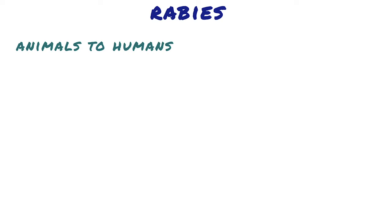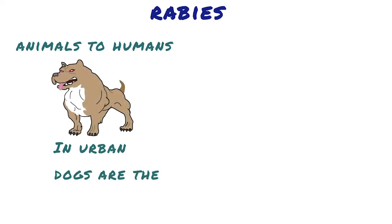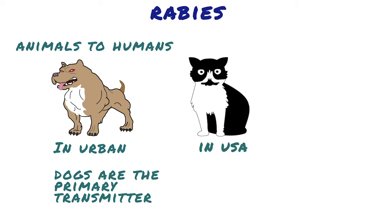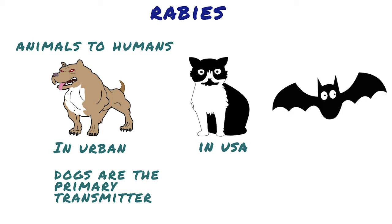Rabies is maintained and spread in two ways. In urban rabies, dogs are the primary transmitter, and in sylvatic rabies, many species of wildlife can serve as transmitters. In the United States, rabies is more prevalent in cats because they are not vaccinated. Virus-containing aerosols, bites, and scratches from infected bats also spread the disease. However, the principal reservoir for rabies in most of the world is the dog.